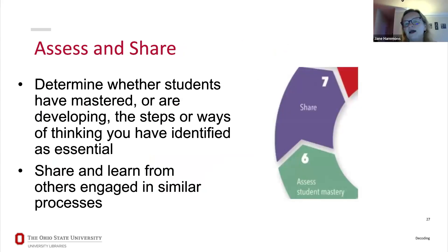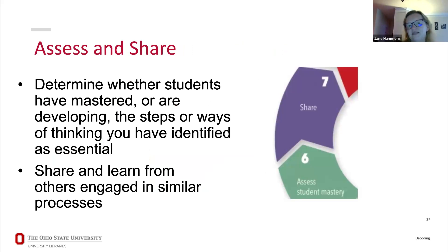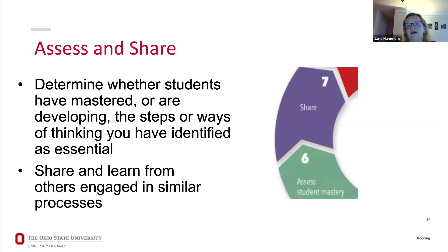The last couple of steps involve assessing whether students actually got what you've been trying to teach — if not, you try something new, maintaining a continual process of assessment. The final stage in their model is sharing with others and then going back to start the process again. It's important to remember there's no expectation that you'll address every single bottleneck in one session. Think about the most important bottlenecks preventing student success, start with one you can address right away, and continue from there. That's why it's a wheel that keeps going around.